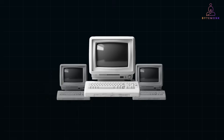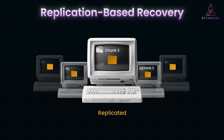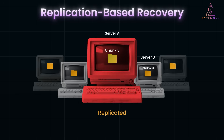In replication-based recovery, if file chunks are replicated — stored on multiple file servers — the system simply fetches the missing chunk from another replica. So if server A fails and was storing chunk three, but server B also has a copy, the system retrieves chunk three from server B instead.